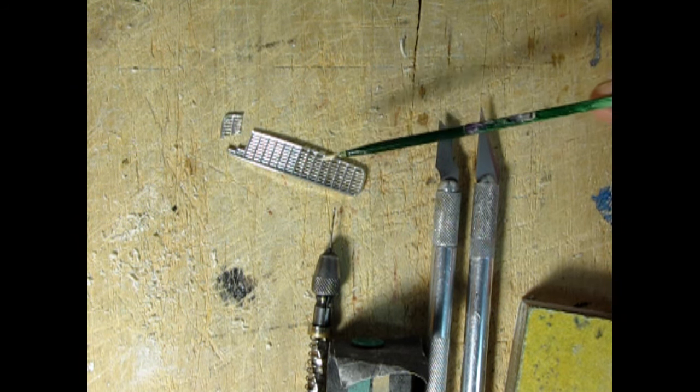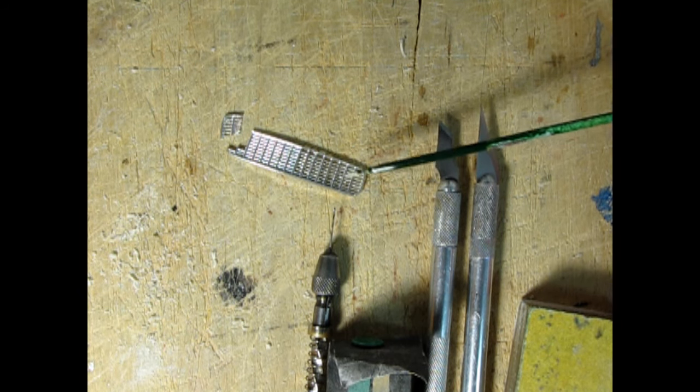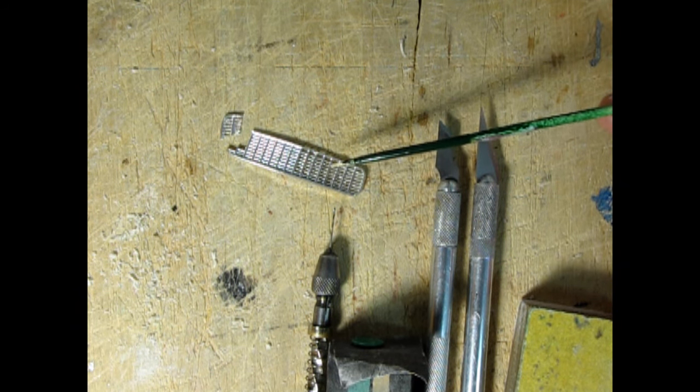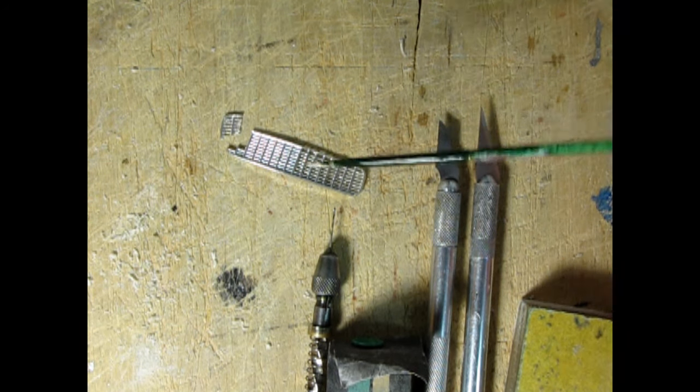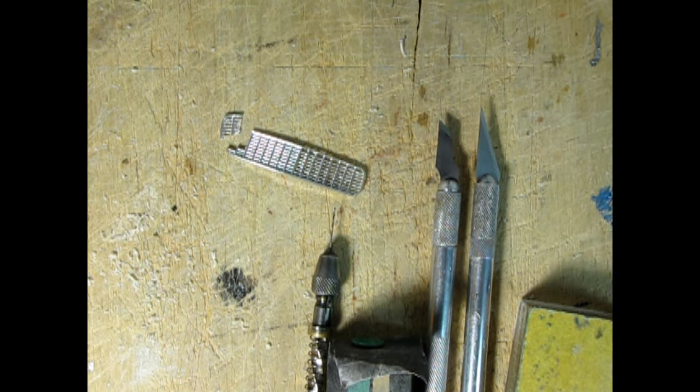And basically this is the grille from AMT's 1955 Chevy. Now it could either be the Bel Air or the Nomad, it doesn't really matter because it's the same part. And I had a spare one in my parts bin.